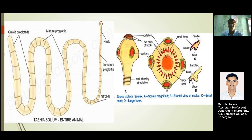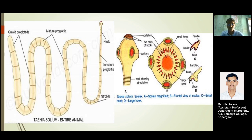As we saw in the last session, immature proglottids change themselves into mature proglottids. Each segment of this tapeworm has a combination of both the male and female reproductive systems present in a single animal. It is therefore known as a hermaphroditic animal. The entire animal is highly segmented.